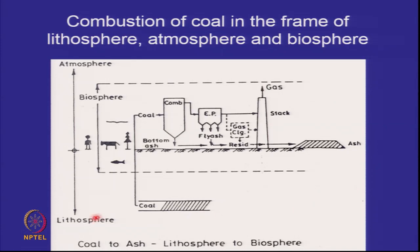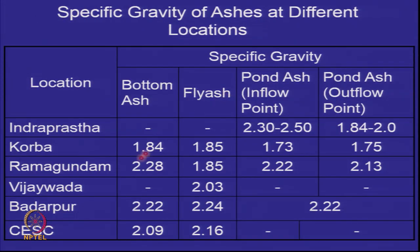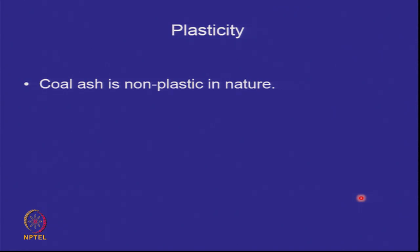To recall: coal coming from deep below the ground goes to a thermal power station and the ash is deposited near it. Bottom ash is sand-sized, fly ash is predominantly silt-sized, and pond ash — a mixture of the two — is partly sand and partly silt. Specific gravity values from different thermal power stations in India typically vary from about 1.7 to 2.2. Ash is non-plastic in nature.